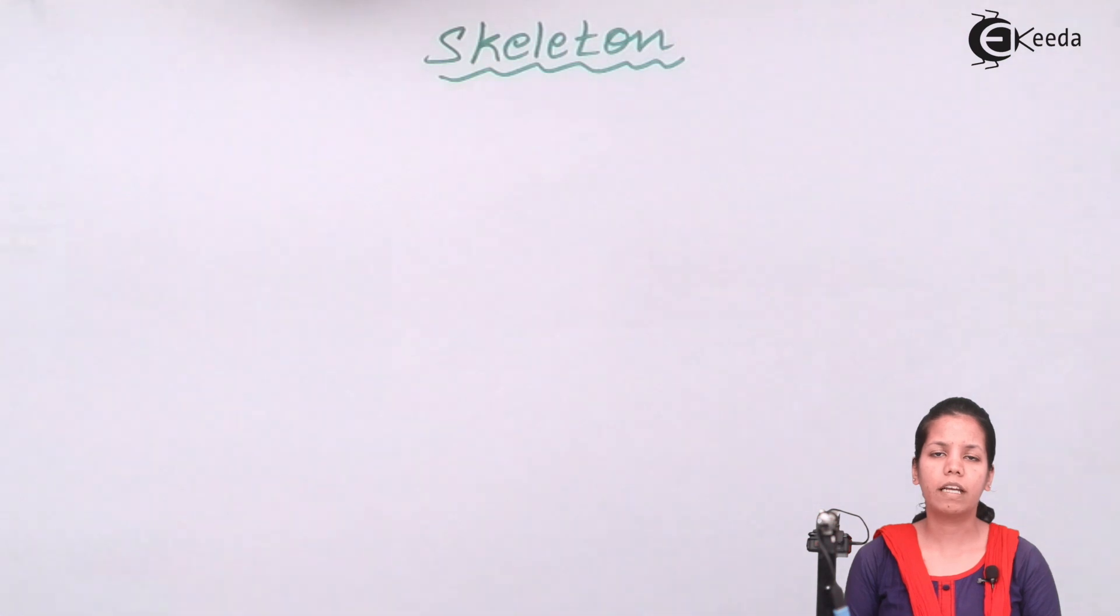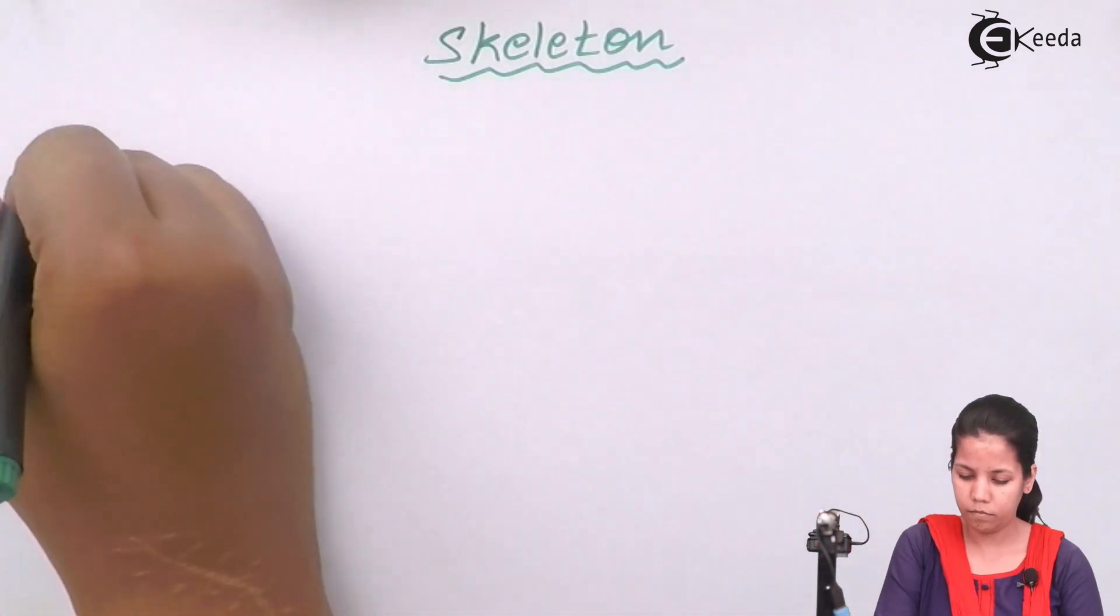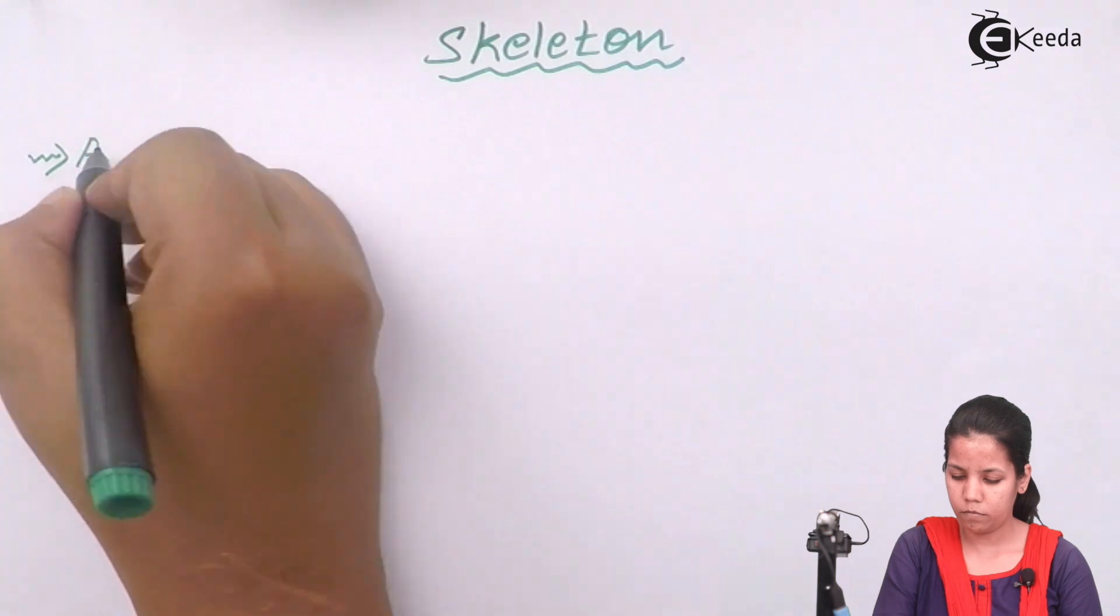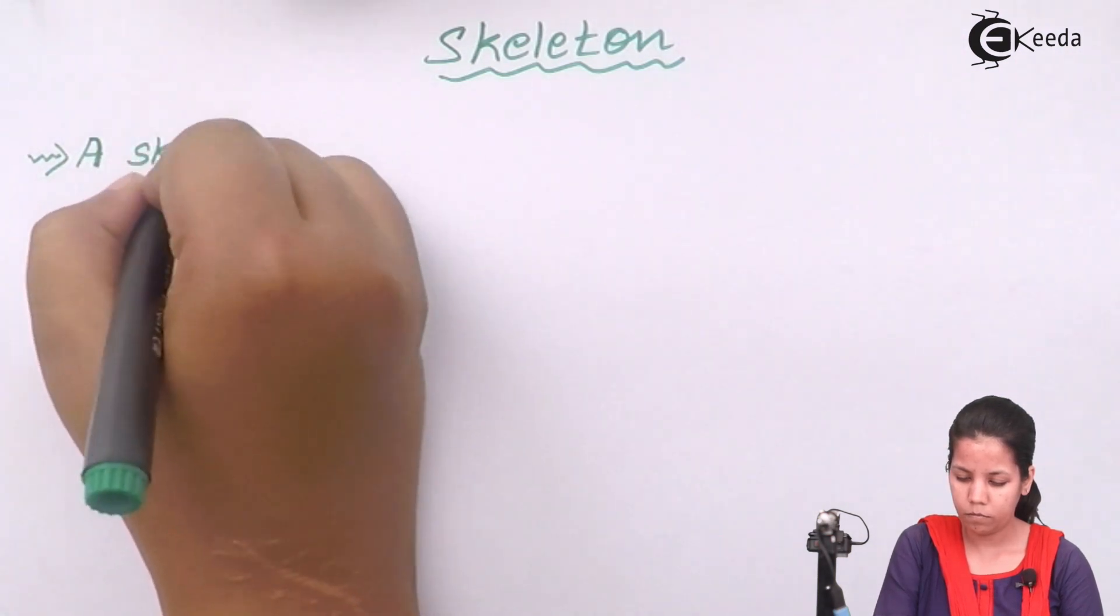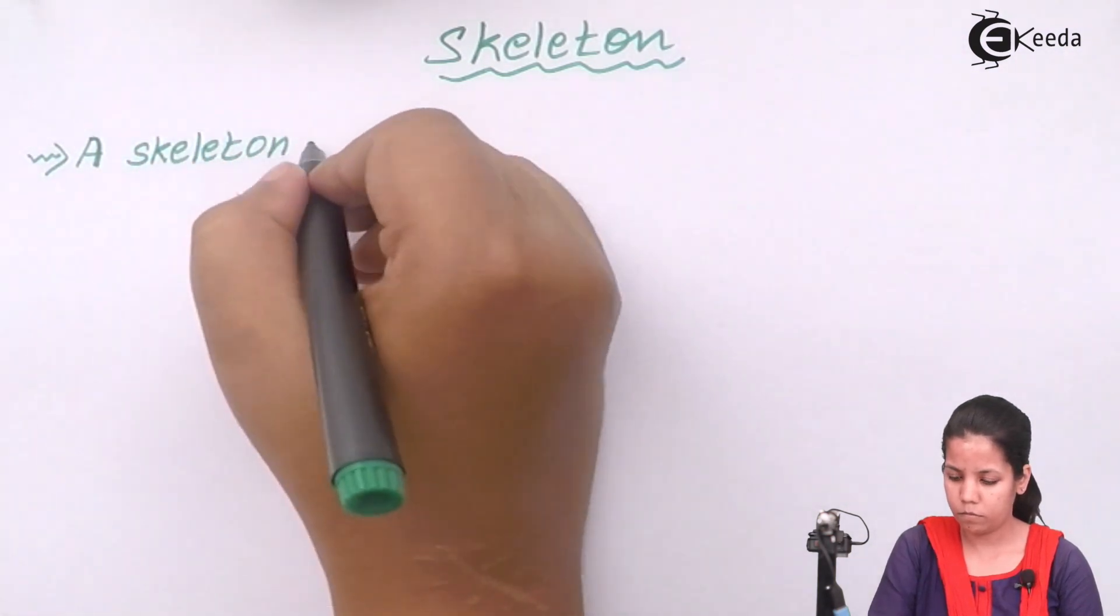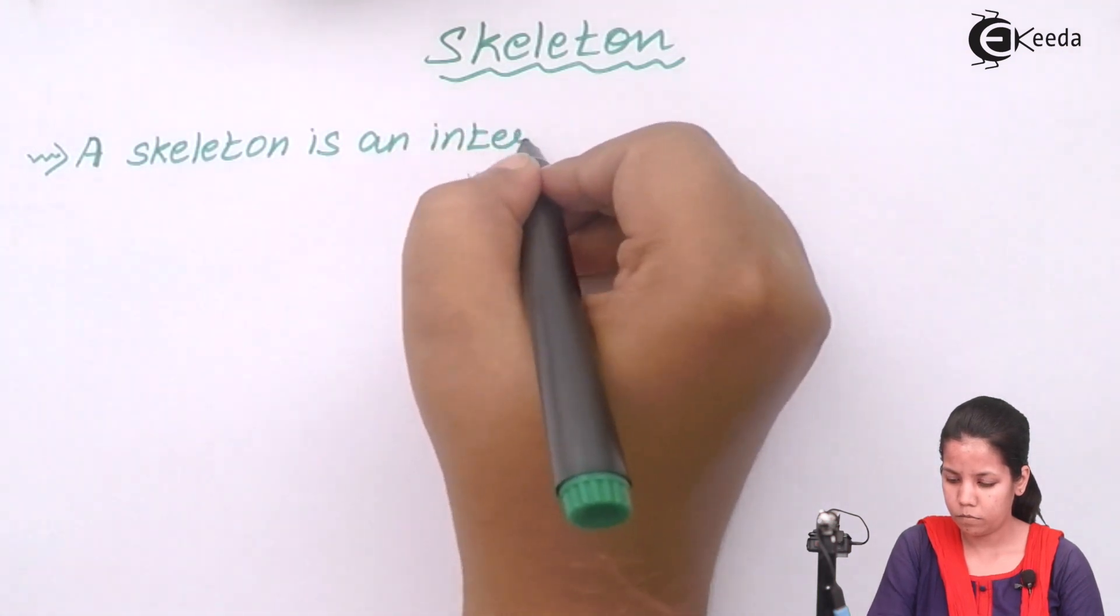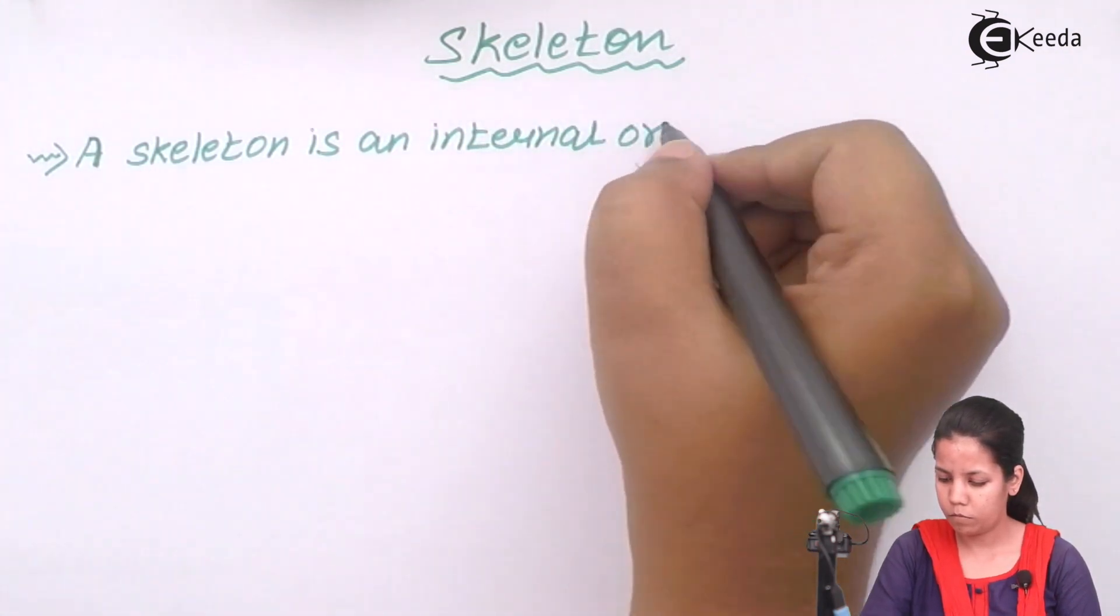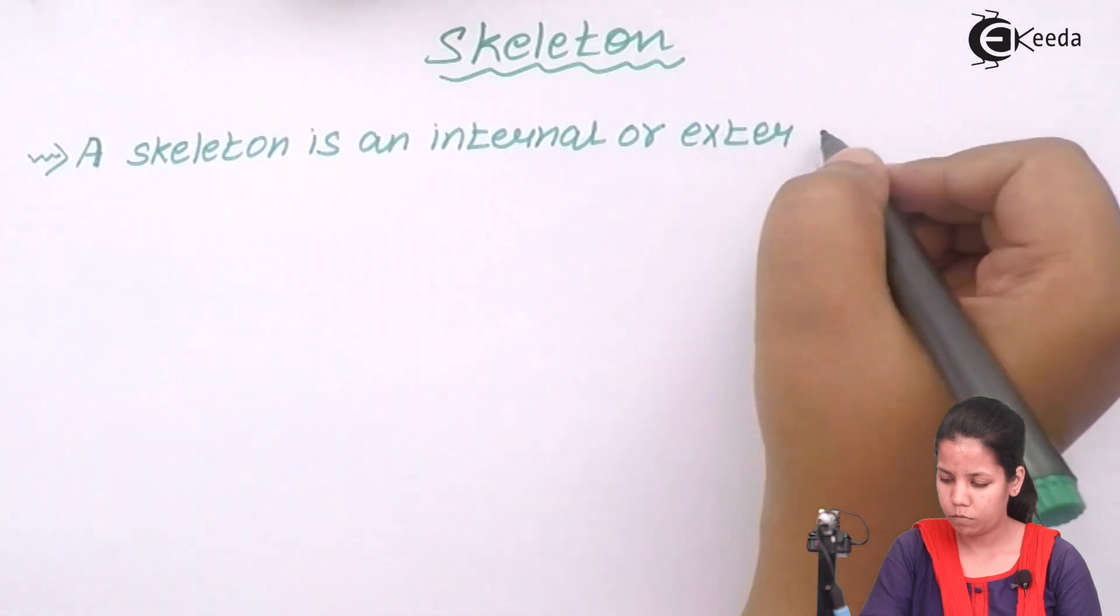Now if I say about endoskeleton, endo means inside. So it includes all the hard part that's present inside the body. And when I talk about exoskeleton, exo means outside. Exoskeleton is nothing but that is present at the upper surfaces of the body.